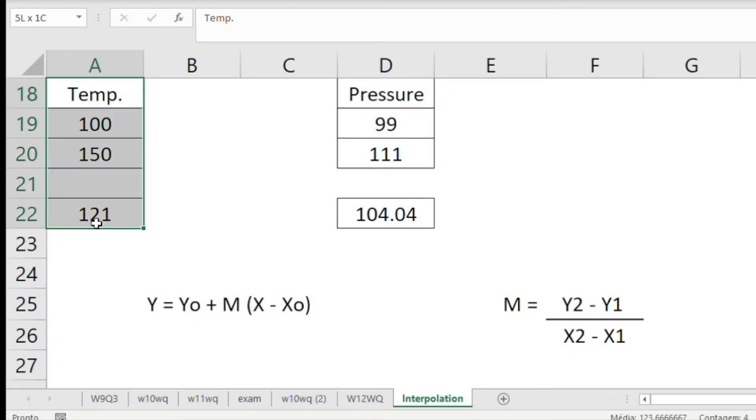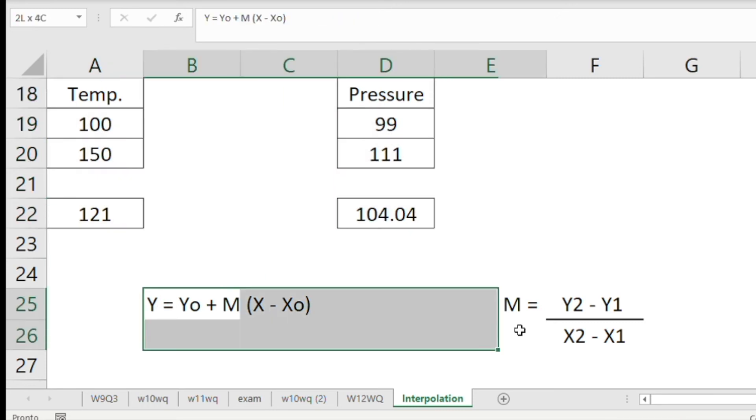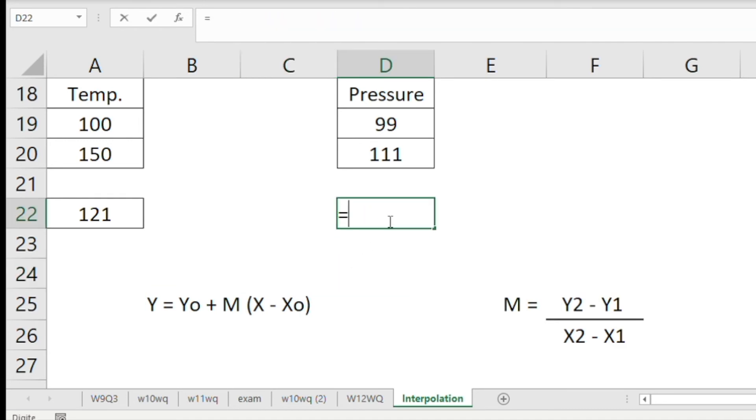So I have the same temperature values here, the same pressure values here. We're doing the same relationship we did on the calculator and when we did it by hand. So what we're trying to find out, let's go again. We're trying to find out the value for Y when we have 121.